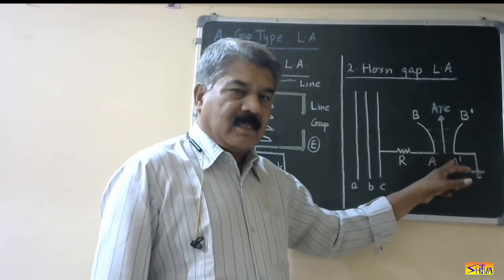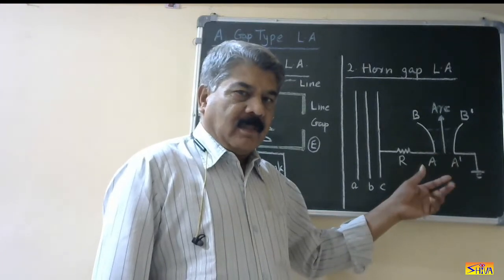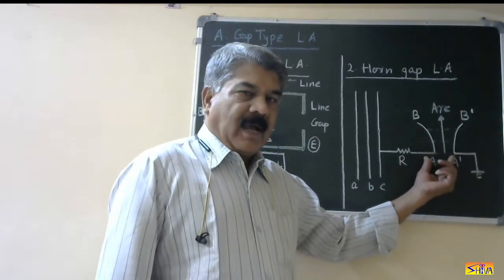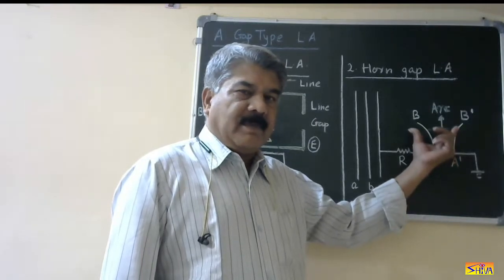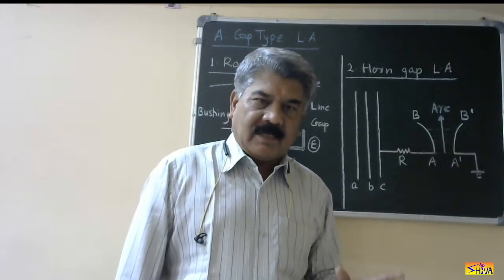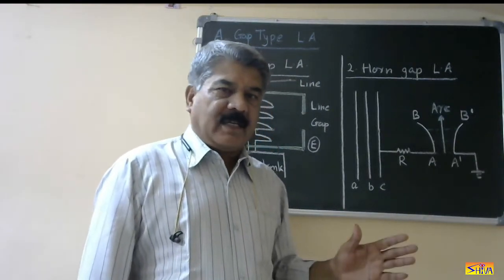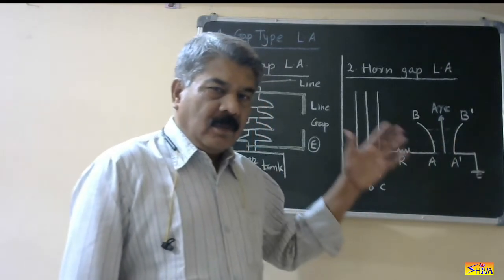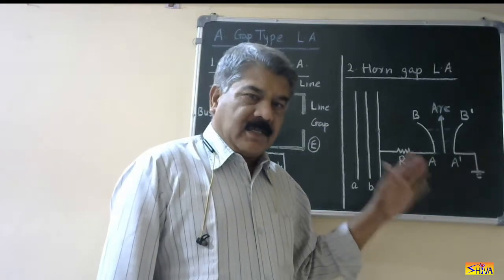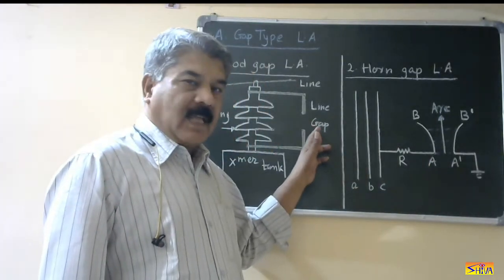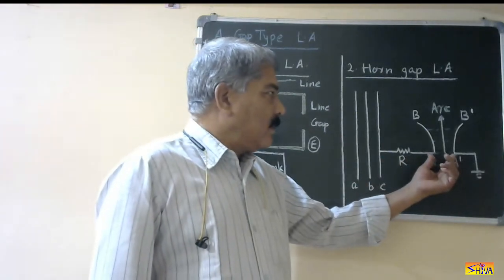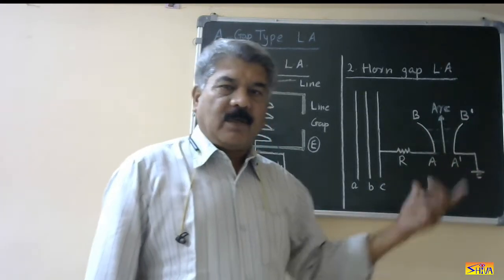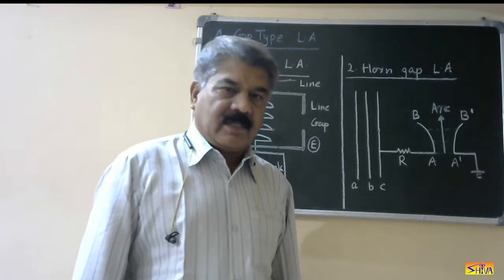The arc starts at the point of minimum distance, that is between A and A-dash. According to the property of the arc, the arc starts moving in the upward direction. As we move from A-dash to B-B-dash, the gap is progressively increasing, so the voltage is insufficient to maintain the arc and hence the arc is extinguished when it reaches the point B-B-dash. The time required to extinguish the arc is relatively less than in the rod gap type lightning arrester because here the arc is moving upward and the gap is progressively increasing.